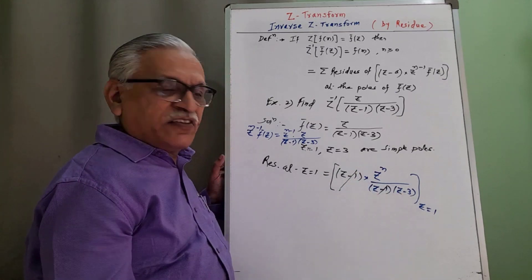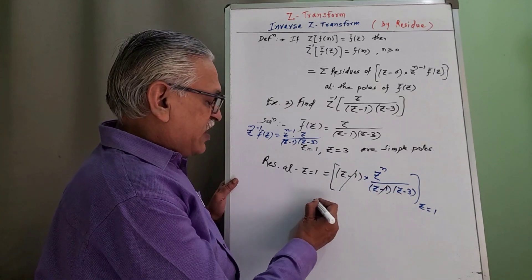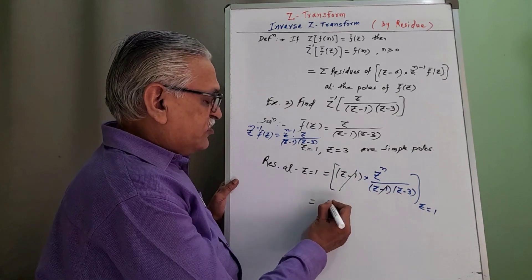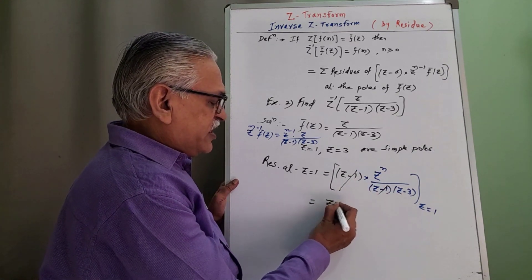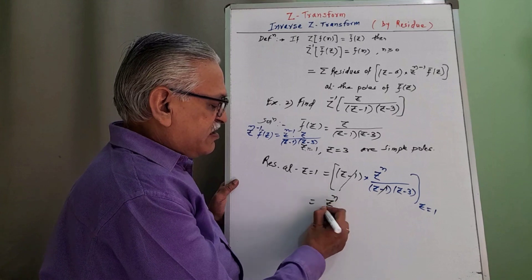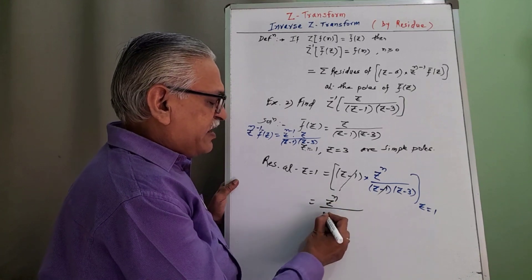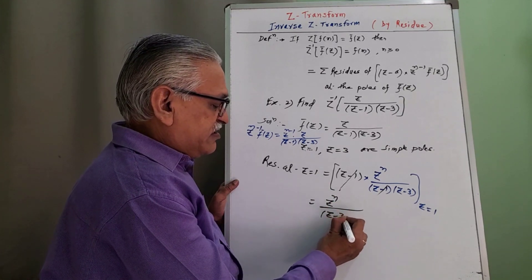The (Z − 1) factors cancel, leaving Z^N/(Z − 3) evaluated at Z = 1, which gives 1^N/(1 − 3) = 1^N/(−2) = −1^N/2.